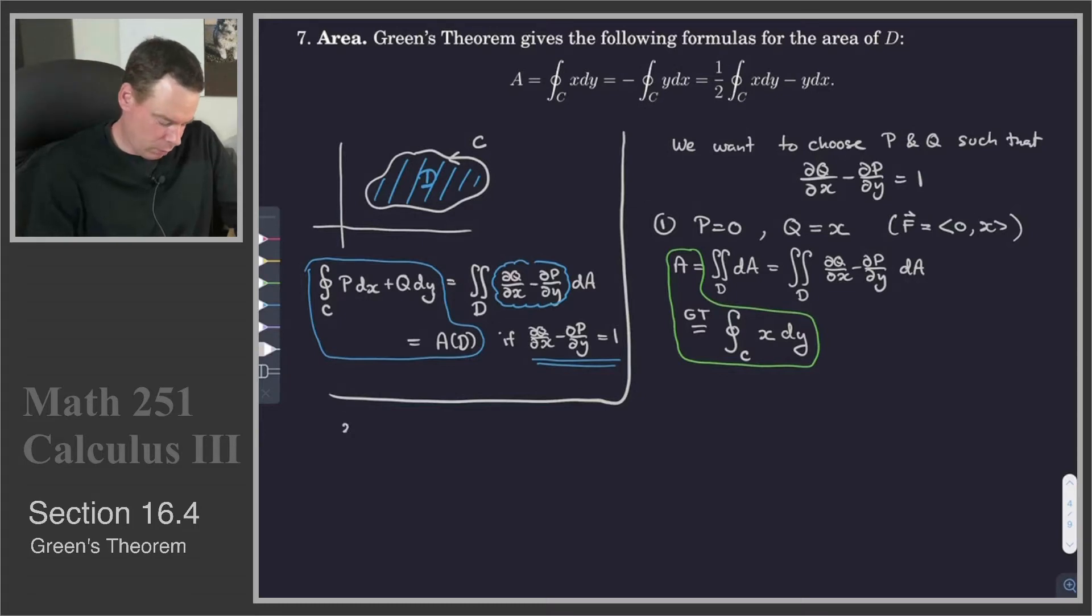What about if I took a different choice? Maybe instead I took P to be negative y and Q to be 0. So in other words, I'm taking my vector field to be (-y, 0).